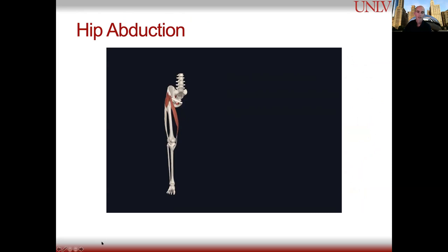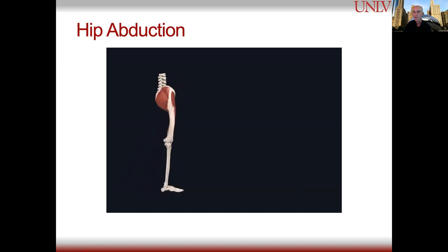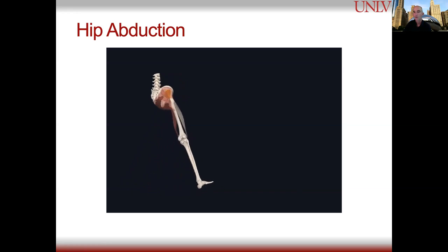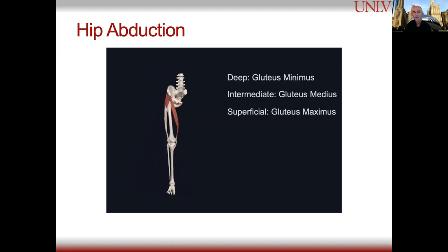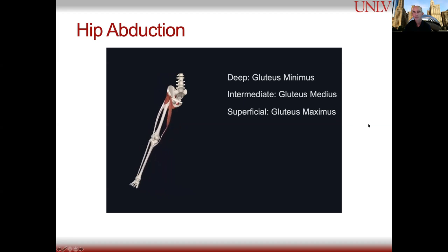The first movement we're talking about is hip abduction — that's the leg moving out to the side. In sports like triathlon we really don't do this movement much, but our body is always counter-balancing against it. We can see the gluteus medius being highlighted here. Basically we have three layers: gluteus minimus, gluteus medius, and gluteus maximus, and they all perform this movement.